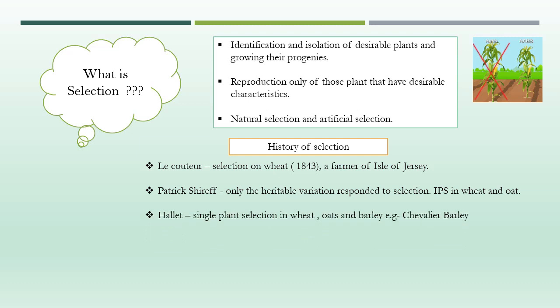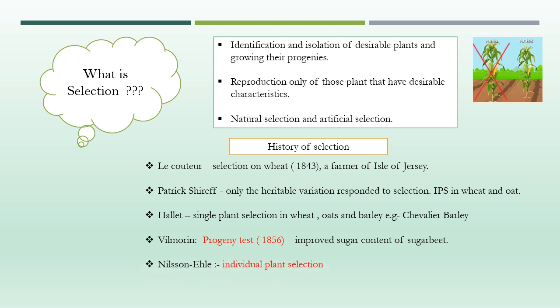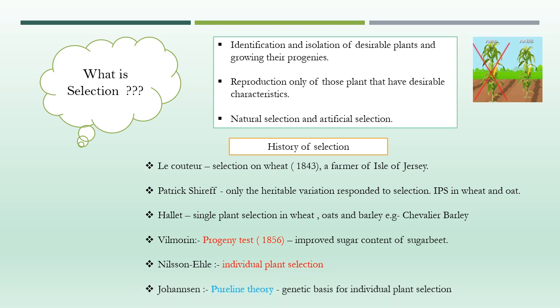Beginning in 1857, Hallett in England practiced single plant selection in wheat, oats, and barley, and developed several commercial varieties, for example Chevalier barley. About this time, Vilmoran proposed individual plant selection based on progeny test, which successfully improved the sugar content in sugar beets (Beta vulgaris) in 12 years. The individual plant selection method was developed in detail by Nilsson Ehle and associates at Svalhoff, Sweden, around 1900. In 1903, Johansson proposed the pure line theory that provided the genetic basis for individual plant selection.